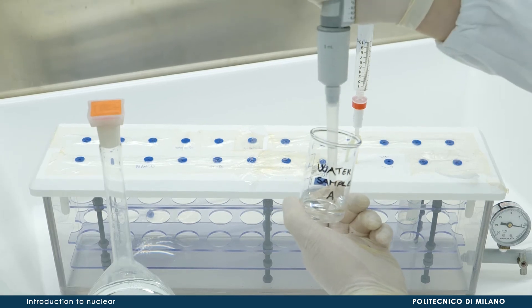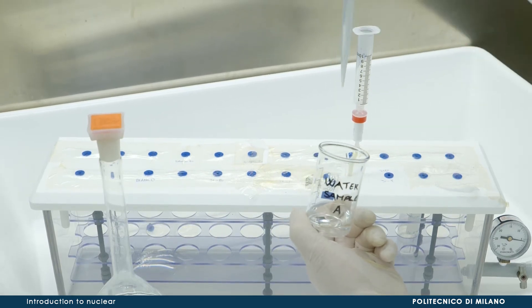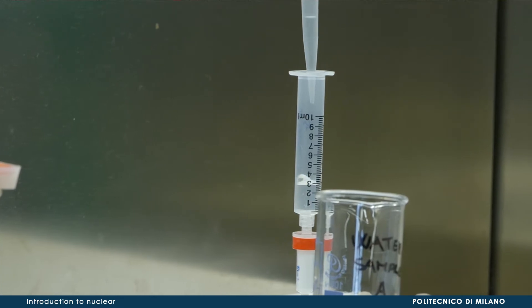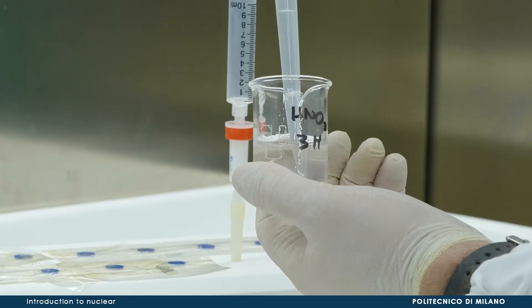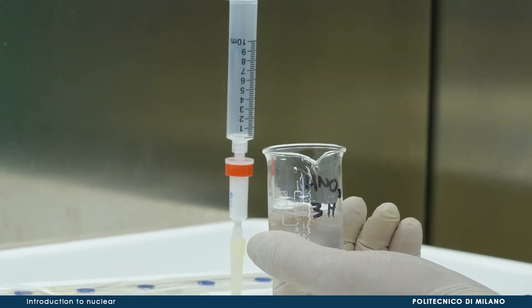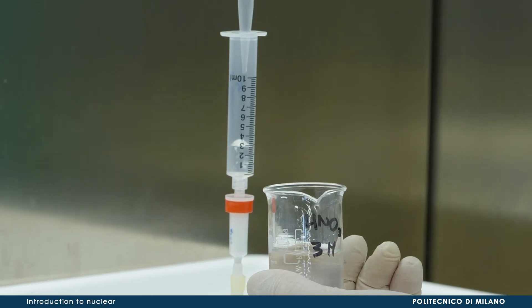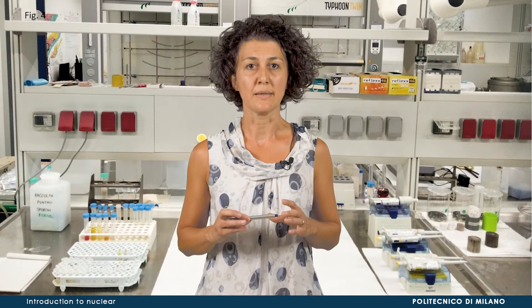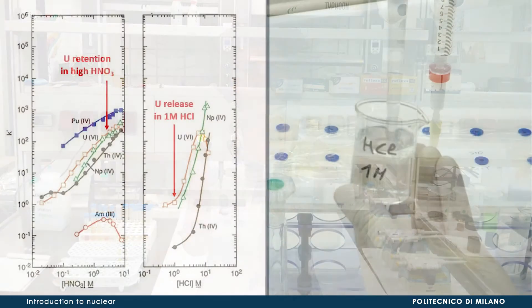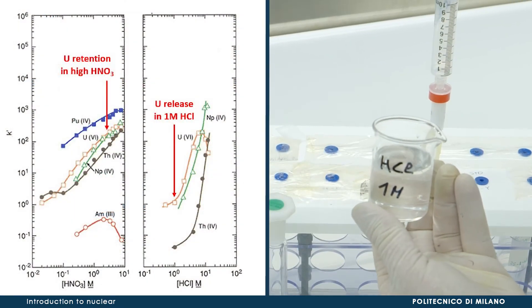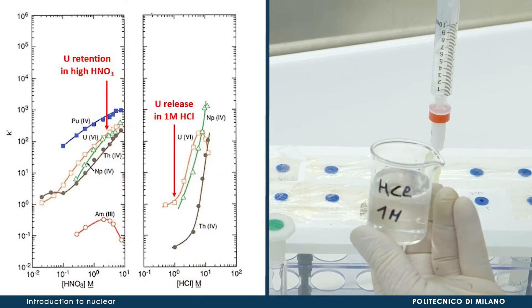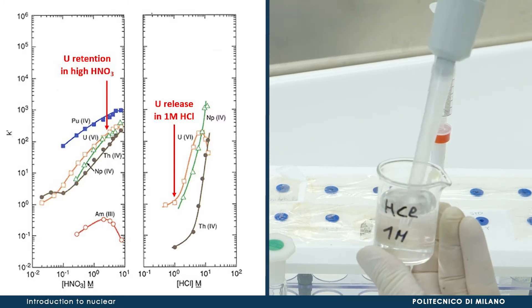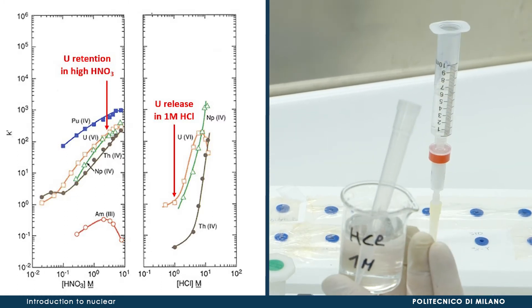The sample solution is loaded on a column specifically designed for uranium separation. The resin inside the column is preconditioned by adding 3 molar nitric acid. In this environment, uranium is retained by the resin while interfering radionuclides are removed. By changing from the nitric to the chloride medium, uranium can be recovered by adding 1 molar hydrochloric acid.